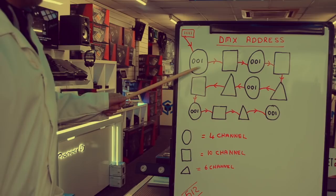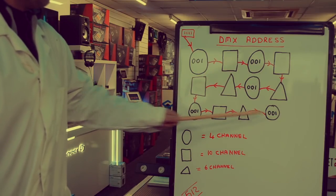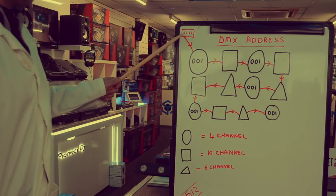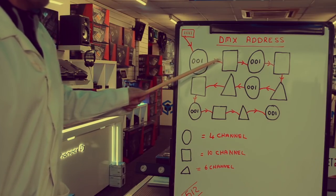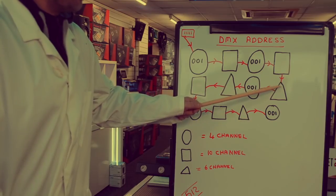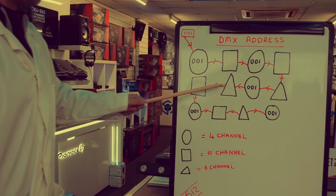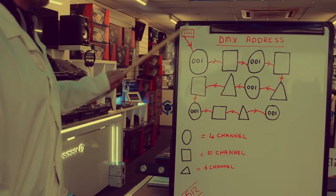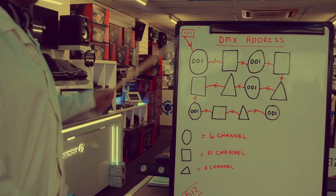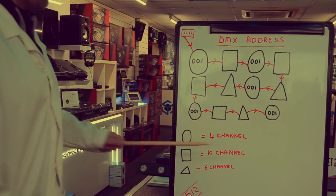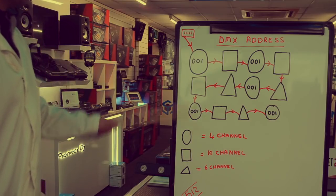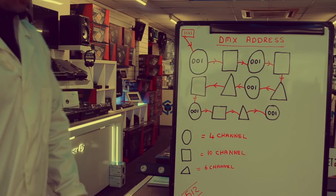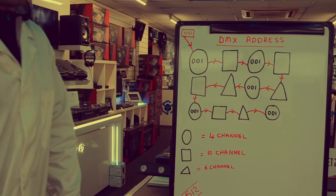So what we've done is: the circle represents fixtures that are all the same, the squares are all the same fixture, and the triangles are all the same fixture. We've come out of our DMX desk and gone right the way along the chain — imagine this on a truss system or a T-bar or a lighting stand; you wouldn't want cables going backwards and forwards. One continuous chain. So we've addressed our first fixture, which is in four-channel mode, as 001, out of the 512 addresses we can choose from.